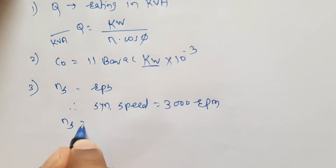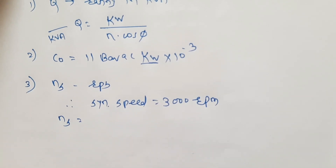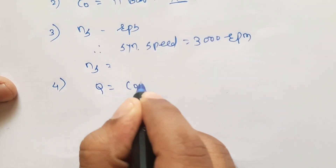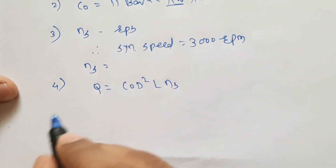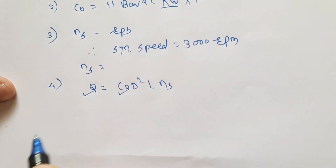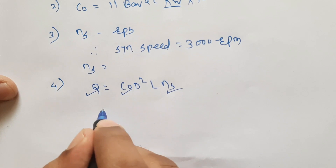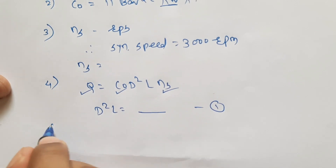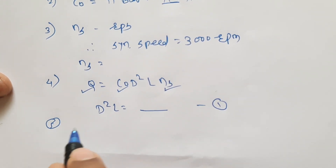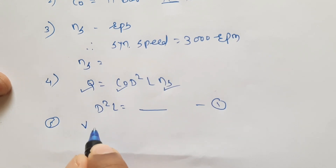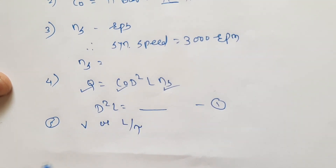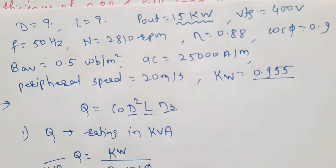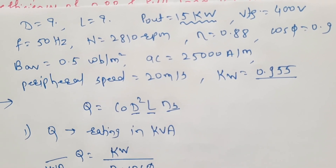From 3000 RPM we get small ns in revolution per second. Then using Q equals C0 into D-squared L into ns, with known Q, C0, and ns, we get equation 1: D-squared L equals a value. Finally, to separate the D-squared L product, we require either peripheral speed V or the L-by-tau ratio. In this problem, peripheral speed V equals 20 meter per second is given.